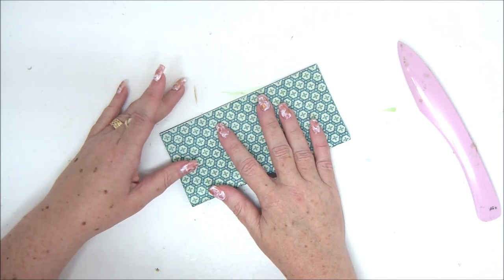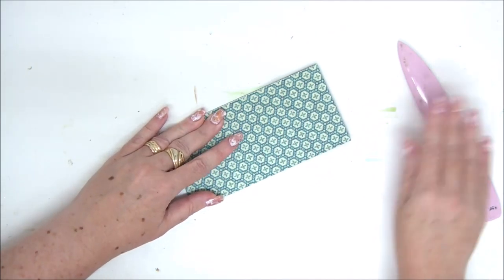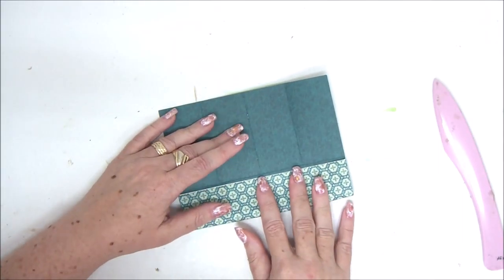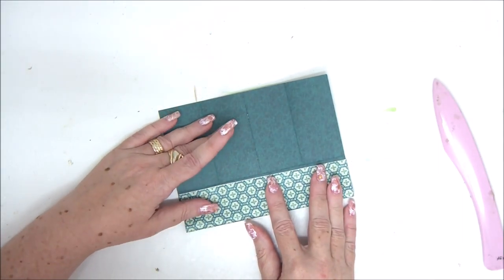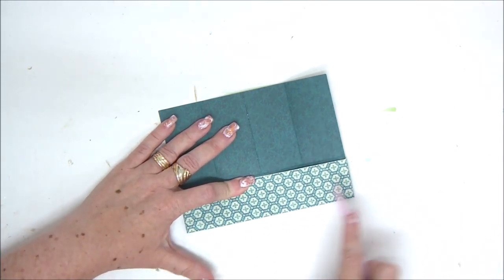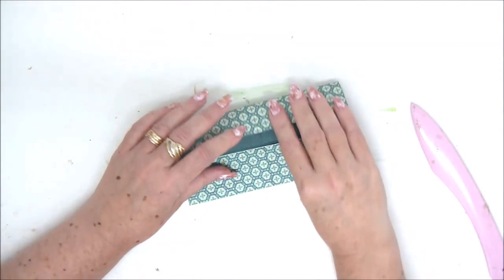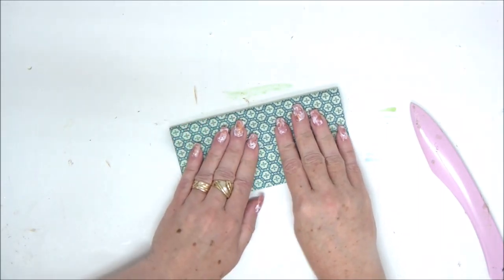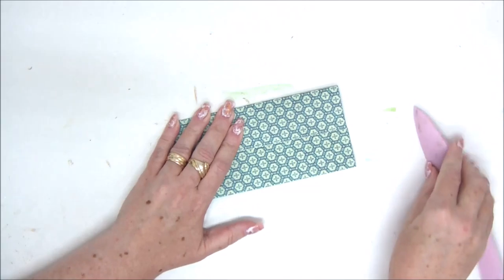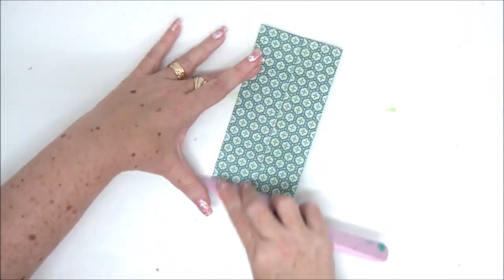Then open everything and do the same thing on the other side. That means fold it in half, open it and then fold one edge towards the center and then the other edge towards the center as well. And then you'll basically get 16 little squares with all the fold lines that you've created.